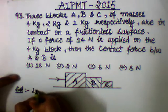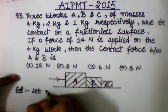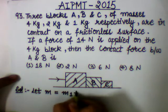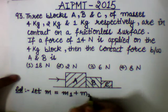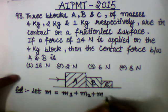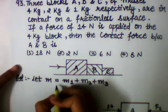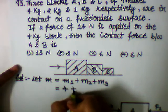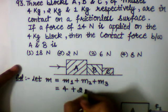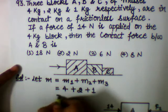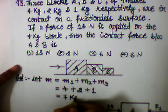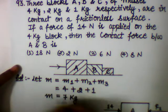First of all, let M equal to M1 plus M2 plus M3, where M is the total mass. Putting the values, we get M equals to 7 kg.